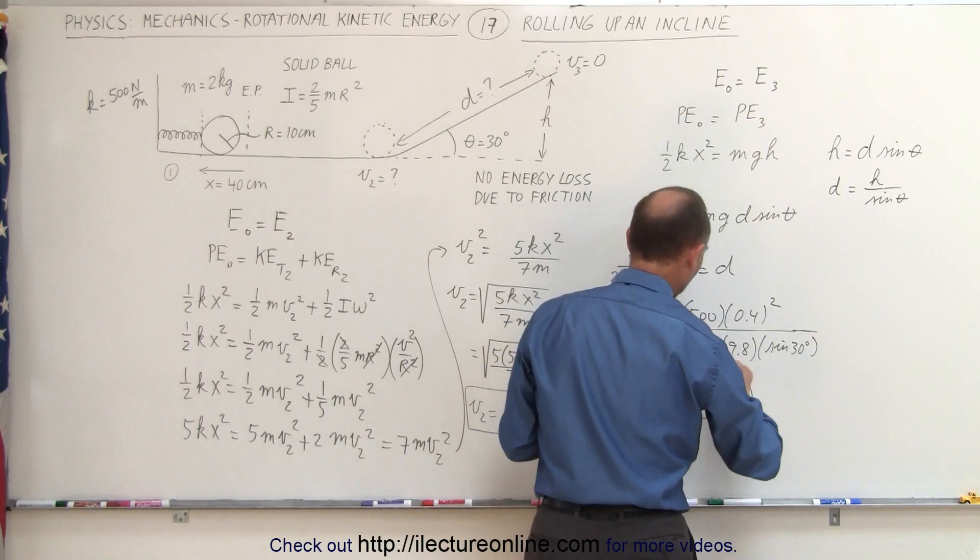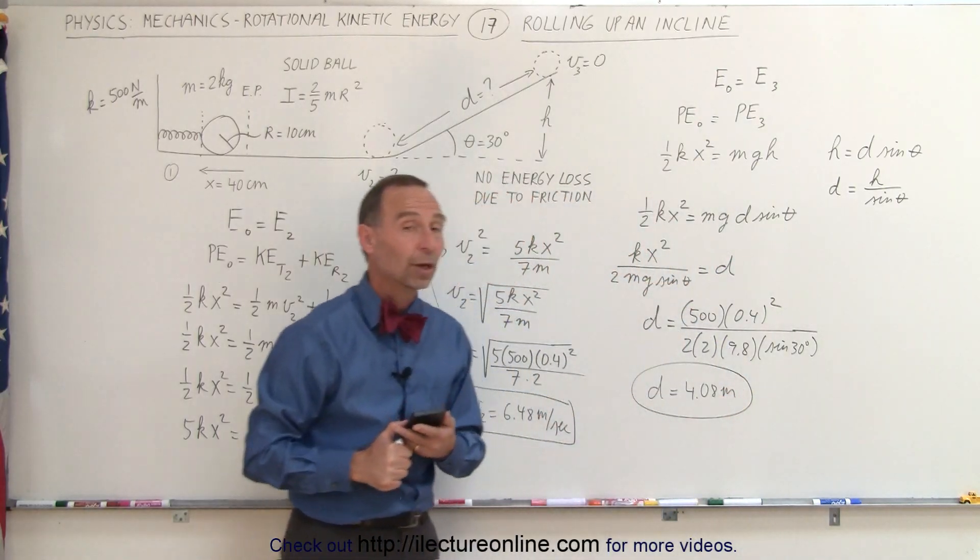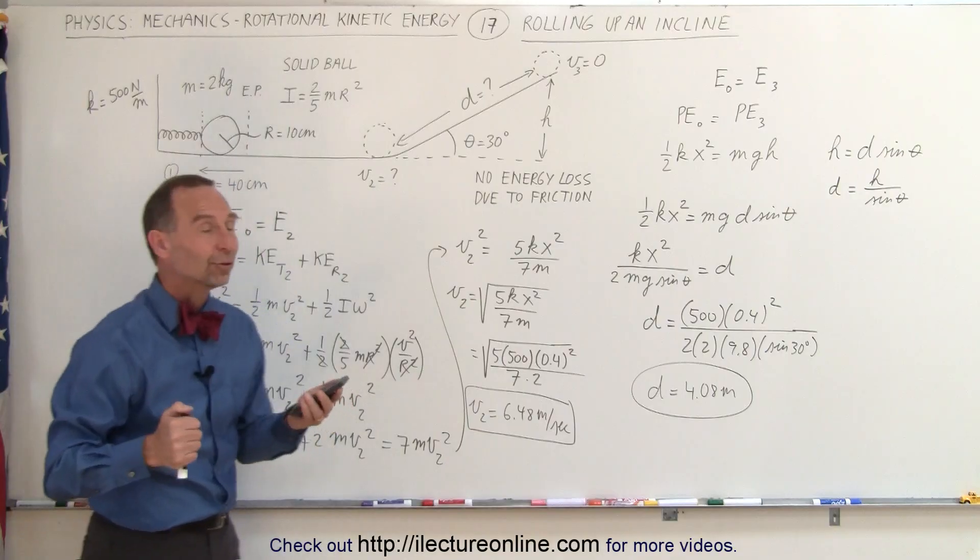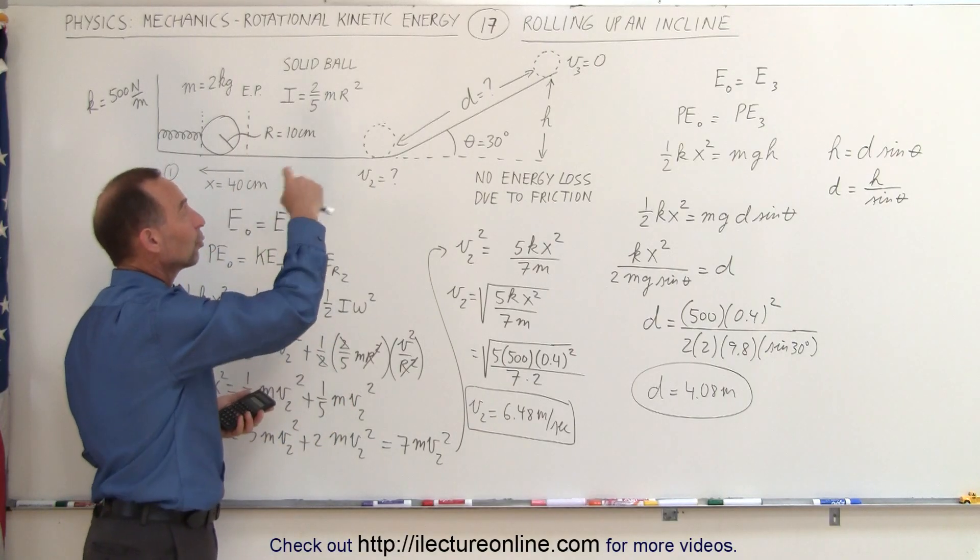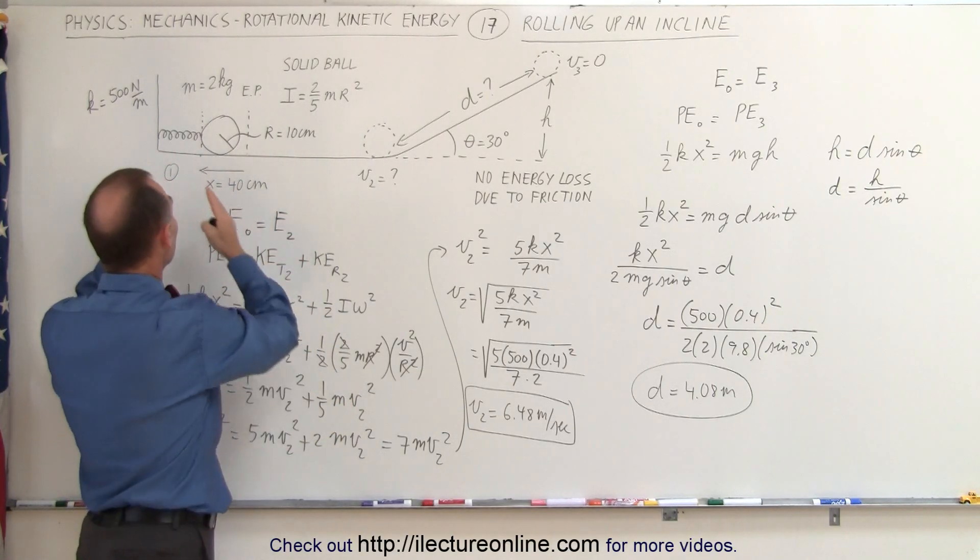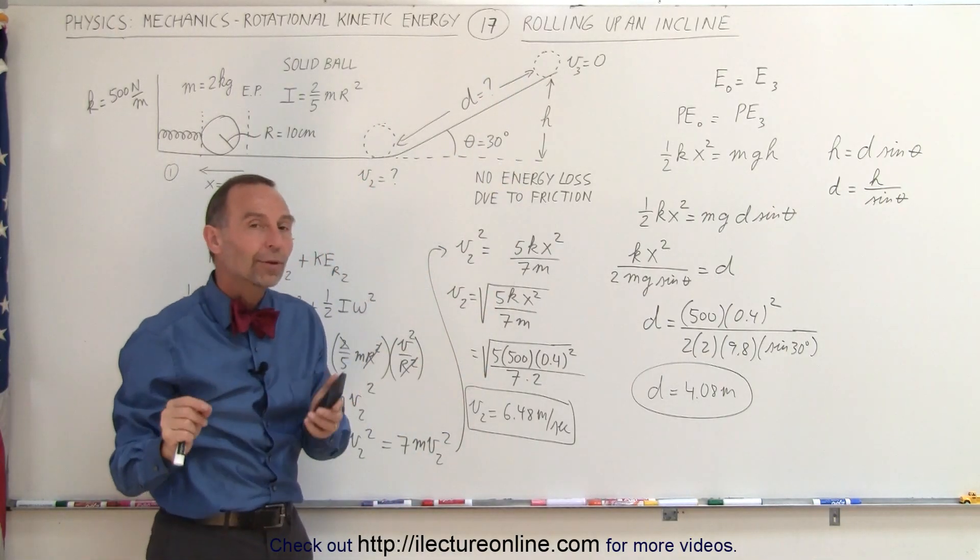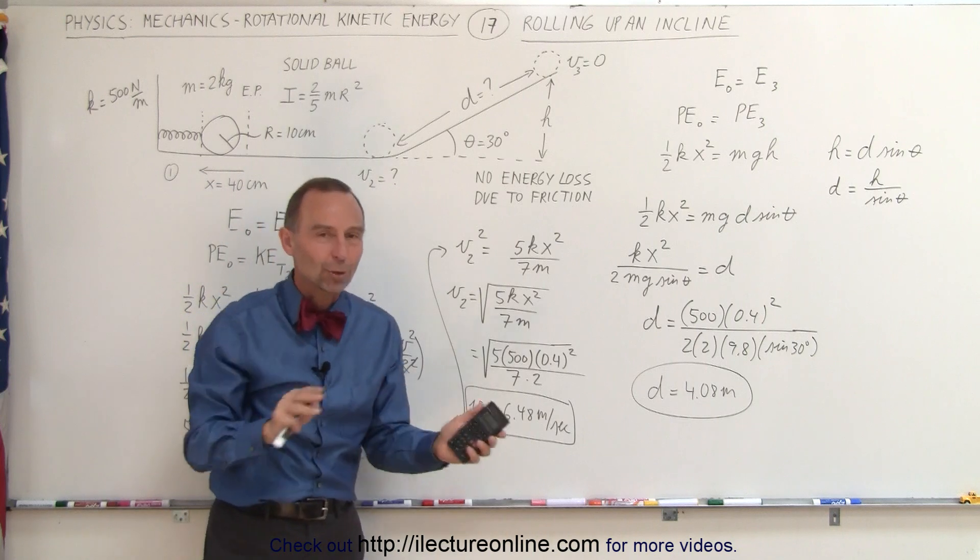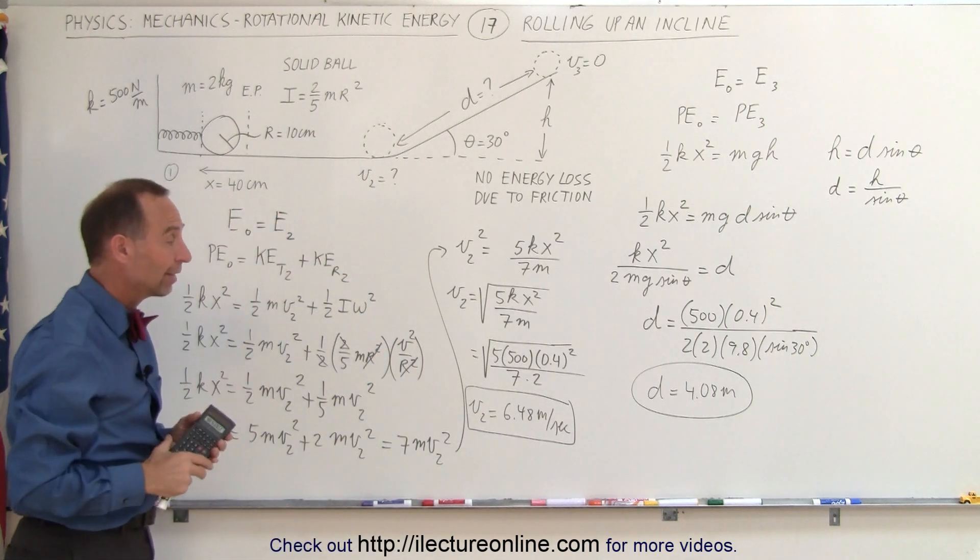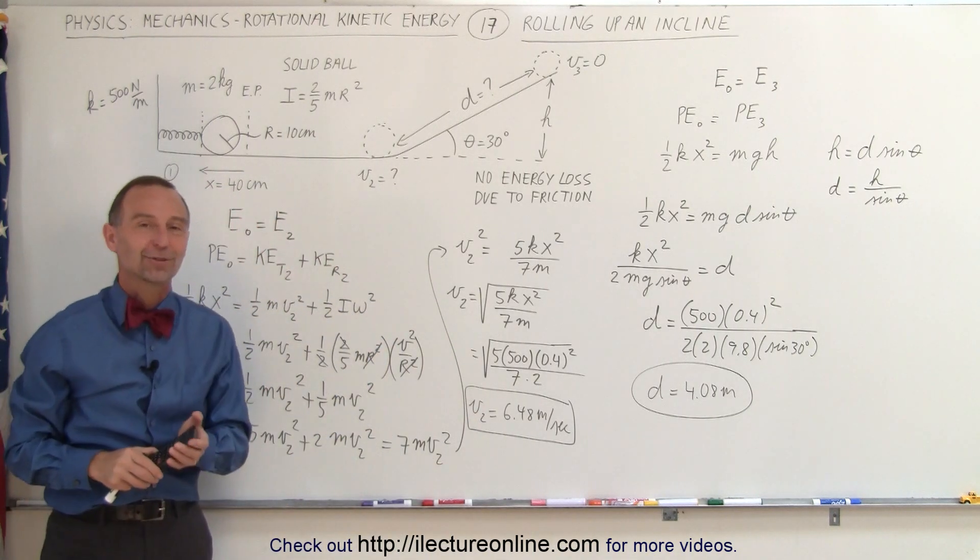And that will be the solution to the second part of the problem. Notice again, it really made no difference at all that the object was rolling or sliding, because the initial condition and the final condition both only have potential energy in it, and no kinetic energy, and that's why it's like this, and that's how it's done.